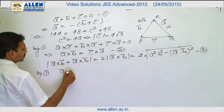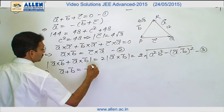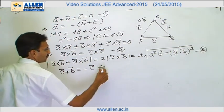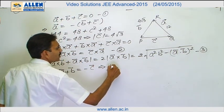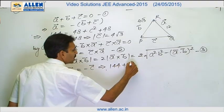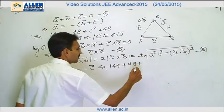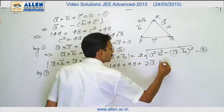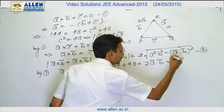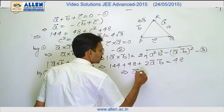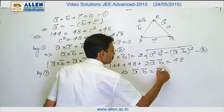It is a plus b vector equals to minus c and after squaring, we will have a square, b square plus 2 a dot b equals to c square. This gives us a dot b equals to minus 72.